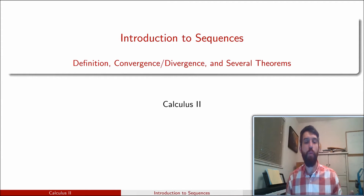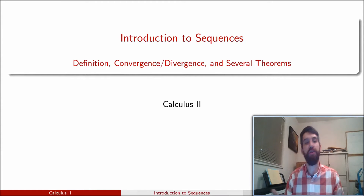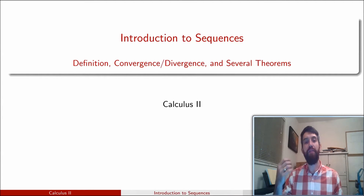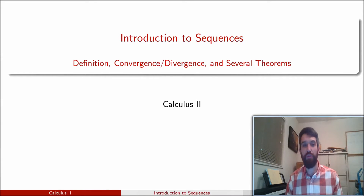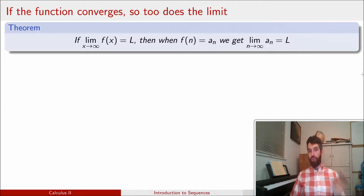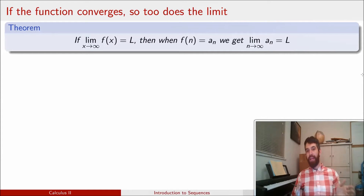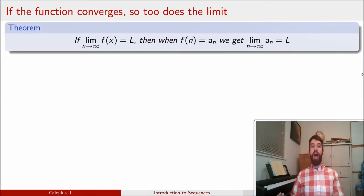In our second video on sequences, we want to turn to the problem of how do we actually determine whether something converges or diverges. Where we left off in the previous video was looking at the connection between the limit of a function as x goes to infinity and the limit of a sequence as n goes to infinity. This is going to be our crucial hook that allows us to use theorems we have proven in Calculus 1 about limits of functions.